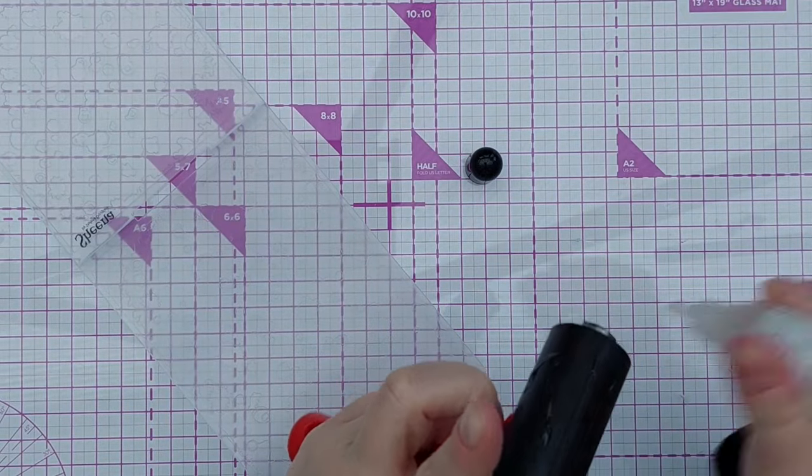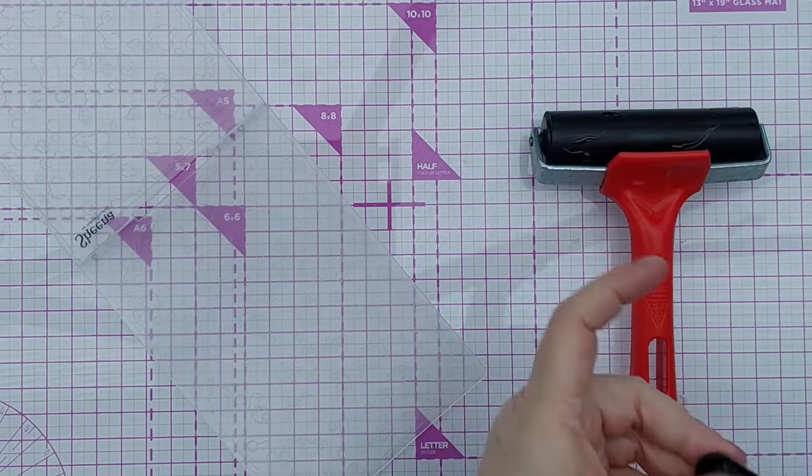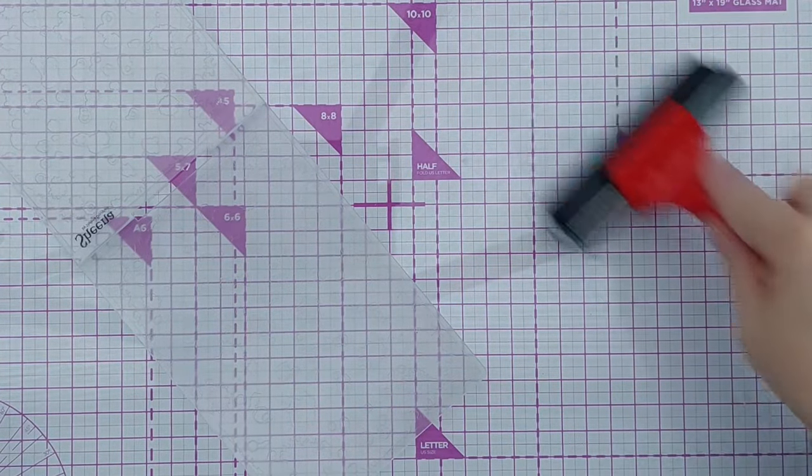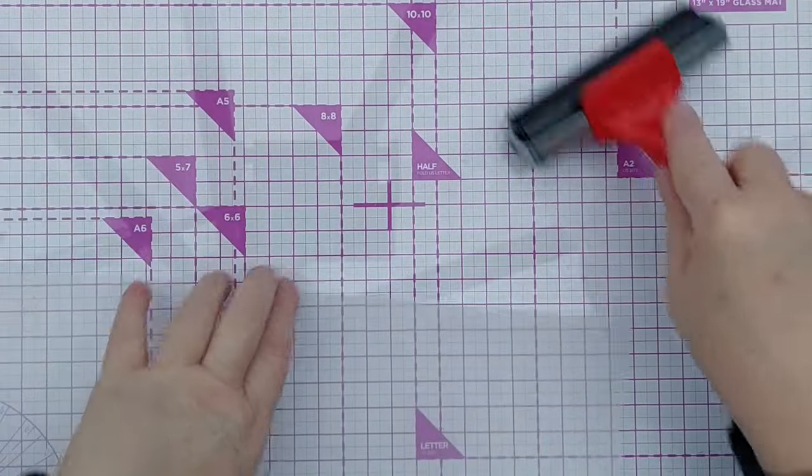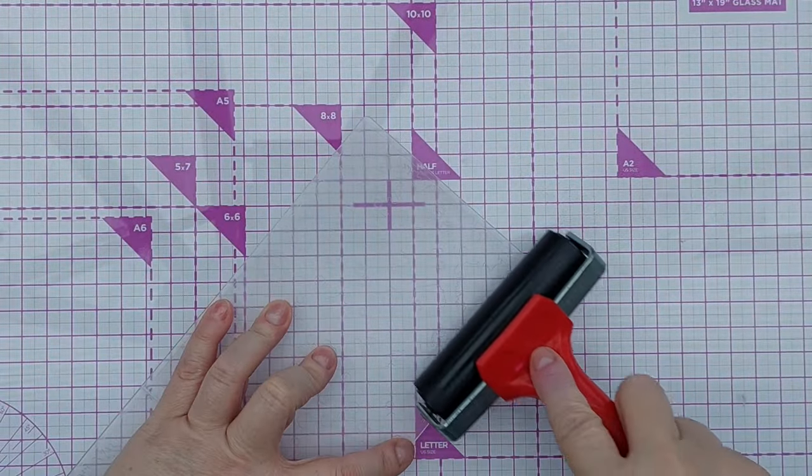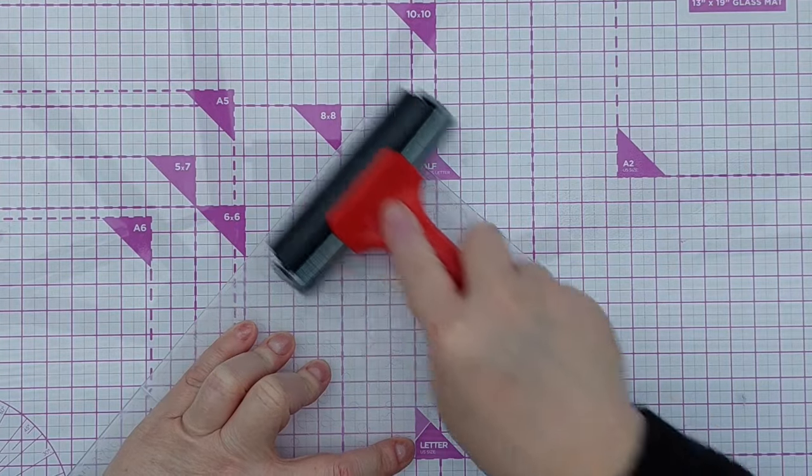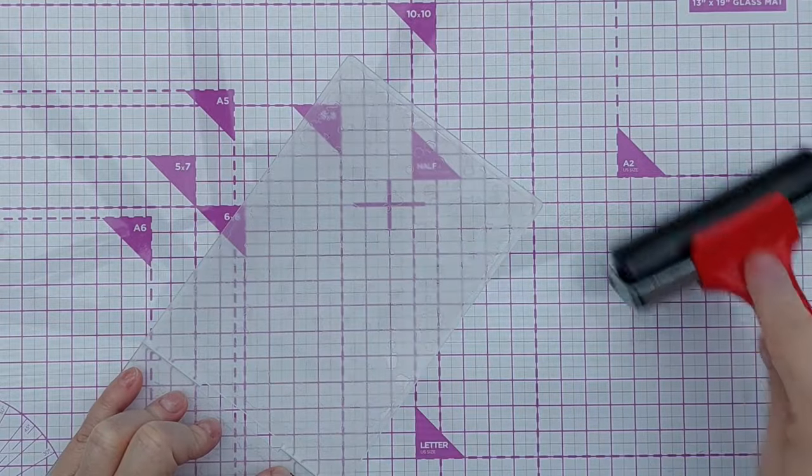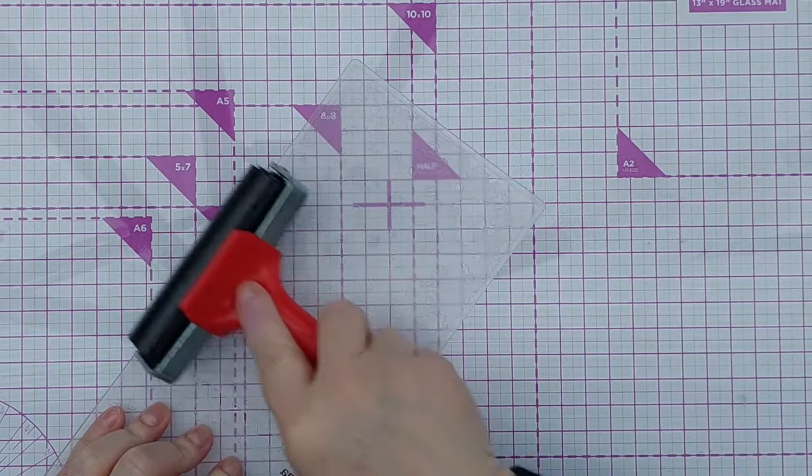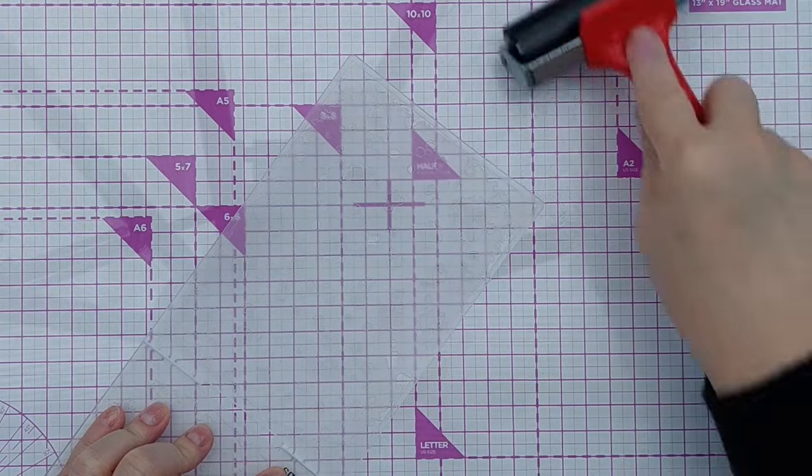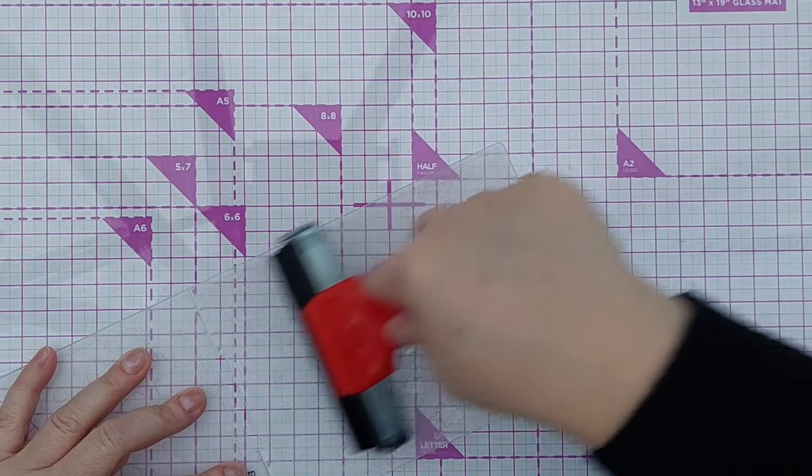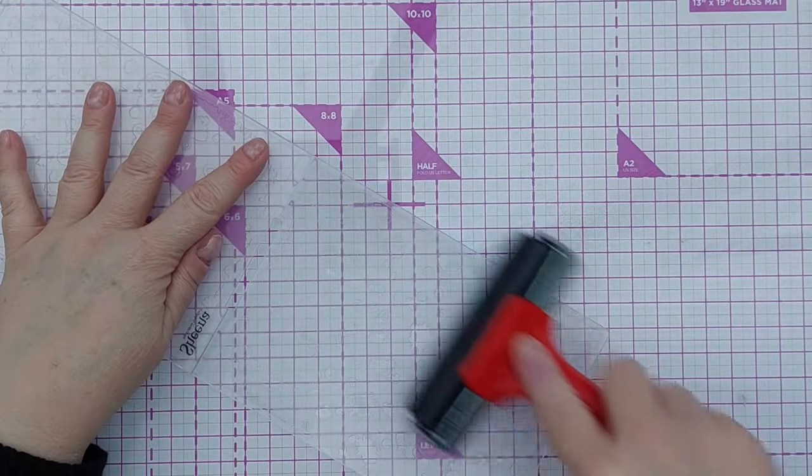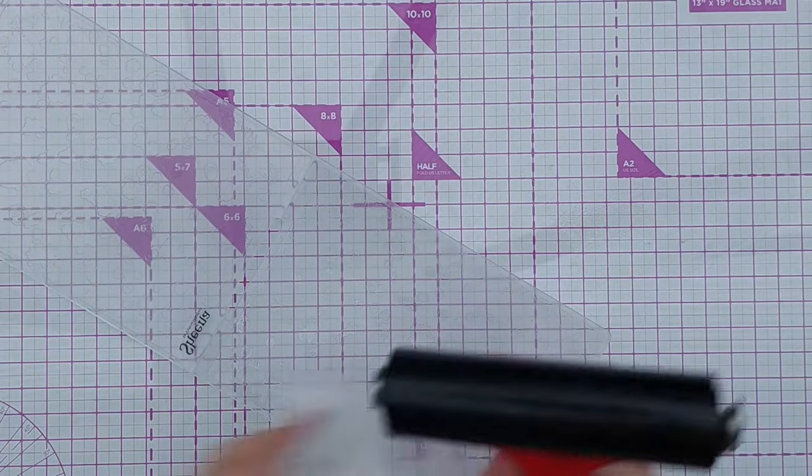I'm going to add it to my brayer here, this is just VersaMark re-inker. Get that coated on my brayer and then roll that over this side of the embossing folder. This is where the blotches are raised up so they will push into my cardstock and make dents or debossing. This embossing folder is a bit warped, it doesn't matter when you're embossing at all.